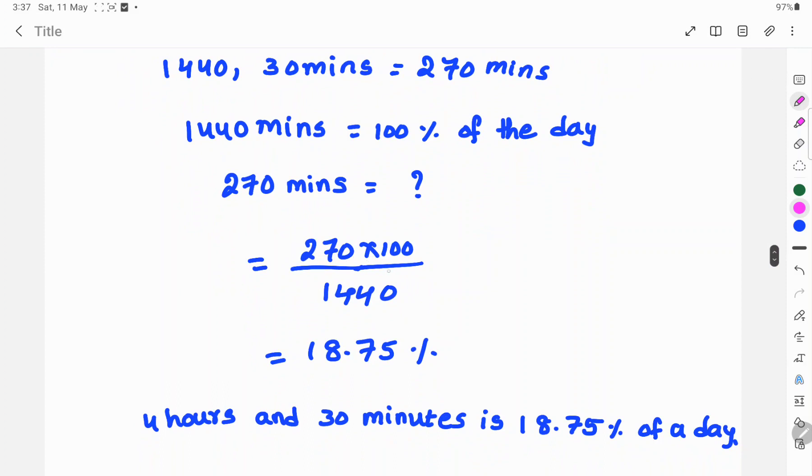270 into 100 by 1440. Here, the zeros will be cancelled.